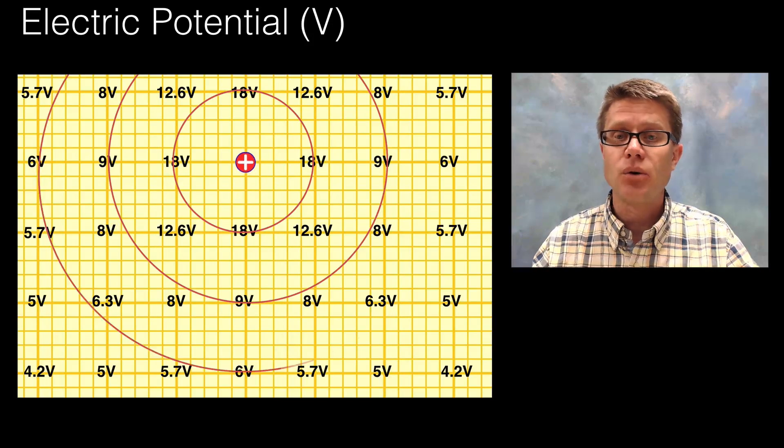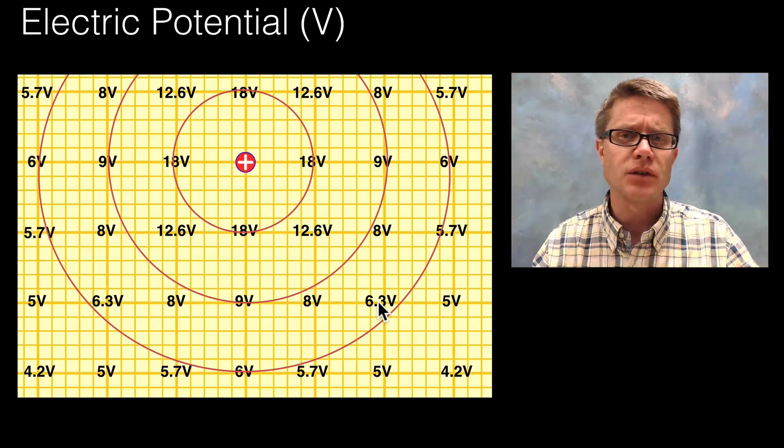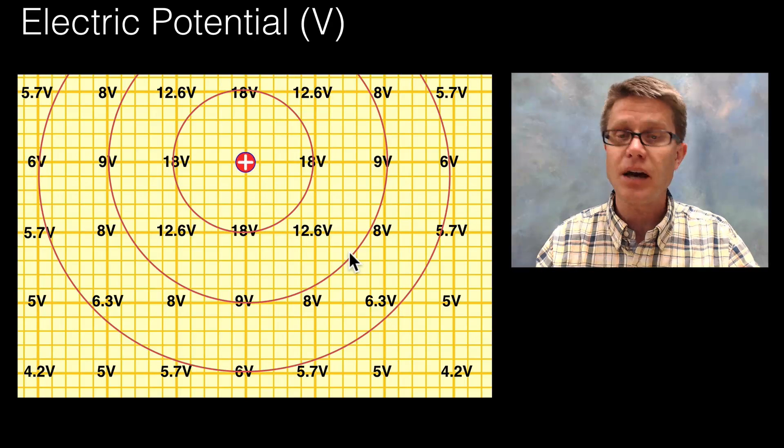18 volt, 9 volt, 6 volt. And so we can start to see why this one right here has a scalar quantity of 6.3 because it's somewhere between 6 and 9.